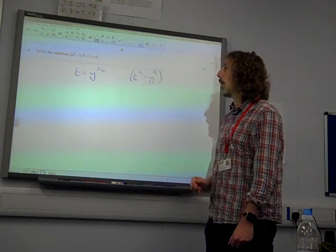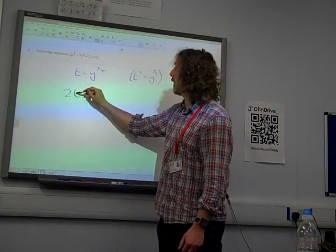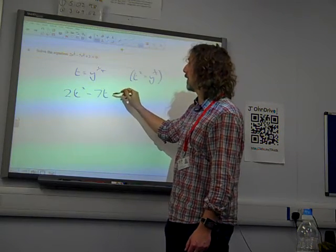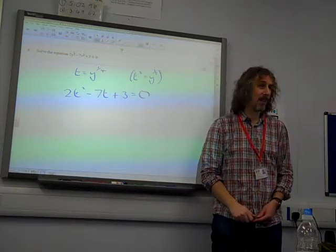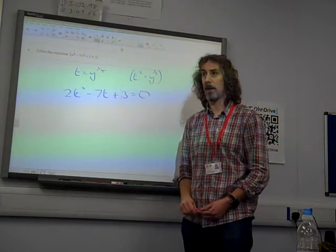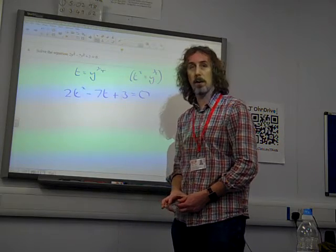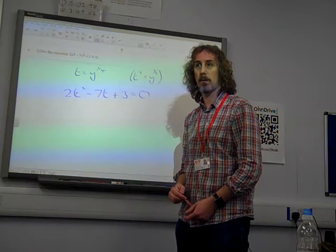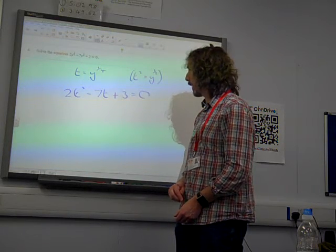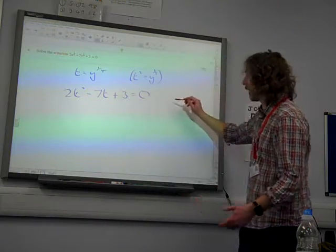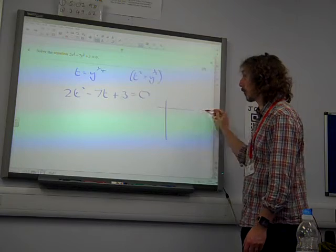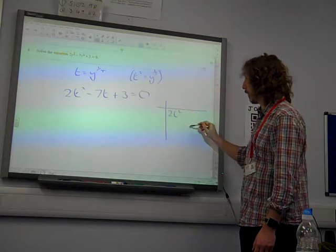We're going to sub it in: 2t squared minus 7t plus 3 is 0. Again, we don't expect these to be particularly unpleasant. Look for it factorising. 2 times 3 is 6. If we do minus 6 and minus 1, that would work, wouldn't it? I am pushing the grid as a thing this year, so there we go.